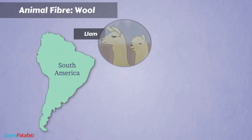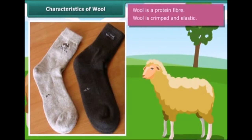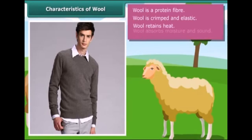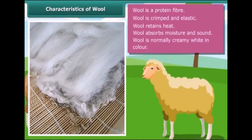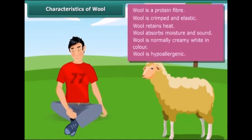In South America, animals such as llama and alpaca provide wool. Angora rabbit also provides wool. Wool is a protein fiber — it is crimped and elastic. The crimp makes wool bulky and helps it retain heat. Wool absorbs moisture and sound because it is hollow. Wool is normally creamy white in color, but can also be black, brown, or silver. Wool is hypoallergenic, meaning it causes fewer allergies in human beings.